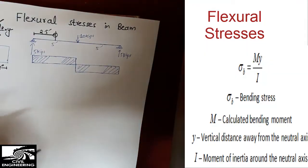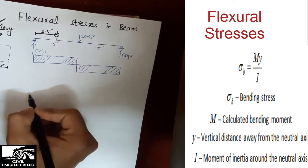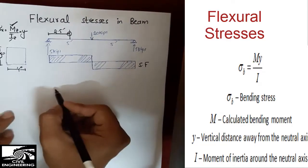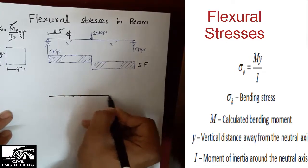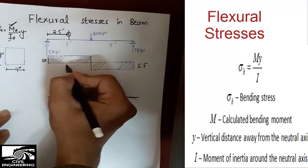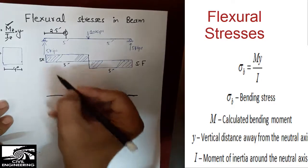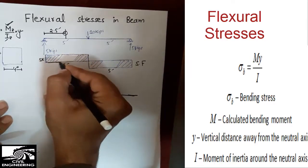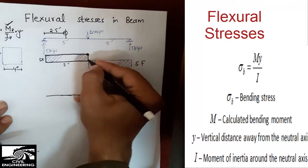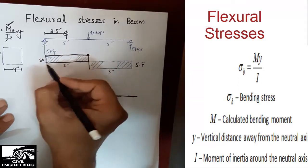From the shear force diagram we can construct the moment diagram. We place a reference line and note the 5 kip shear force acting over a 5 foot distance on each side. The moment diagram forms a triangle shape, and we can find the moment at any point by computing the area under the shear force diagram up to that point. At the midpoint, we are interested in the peak moment.